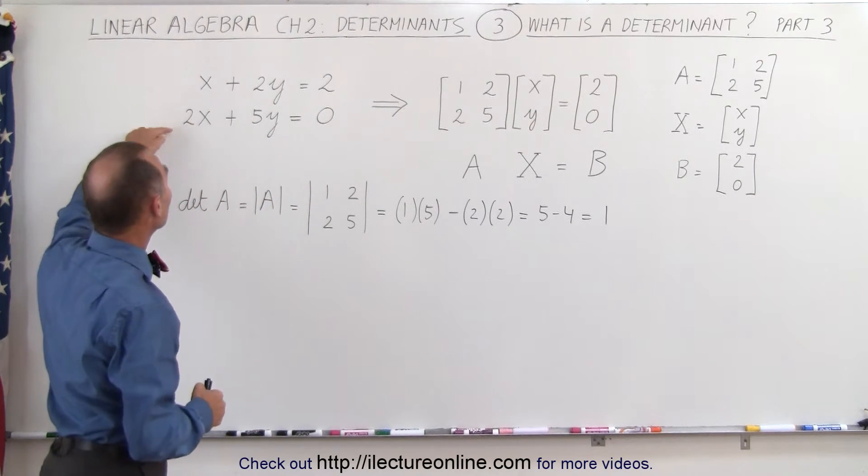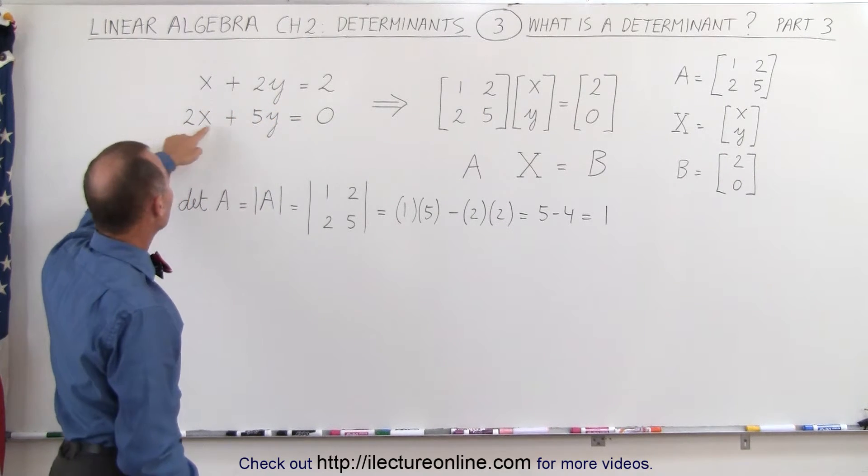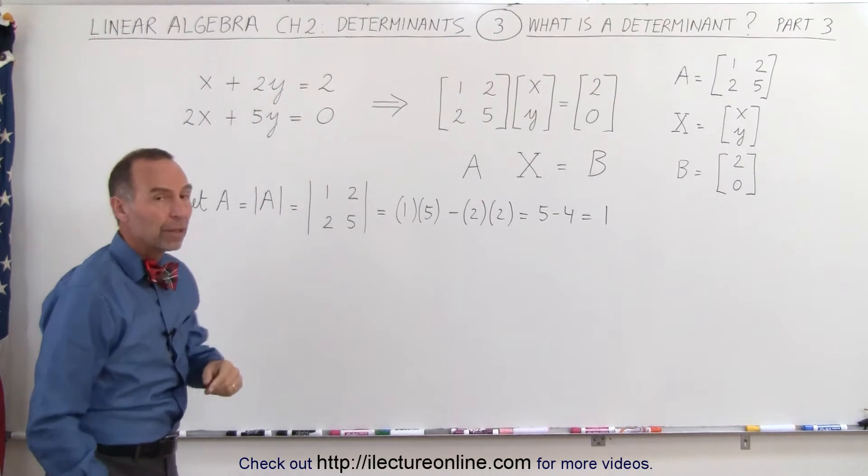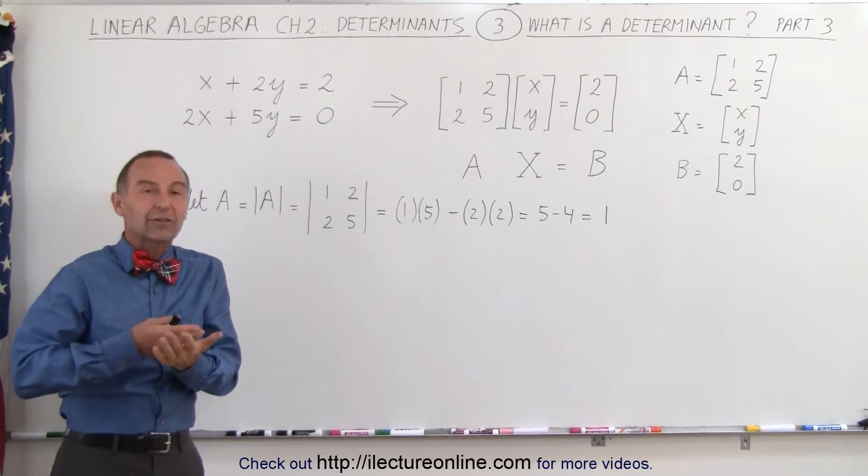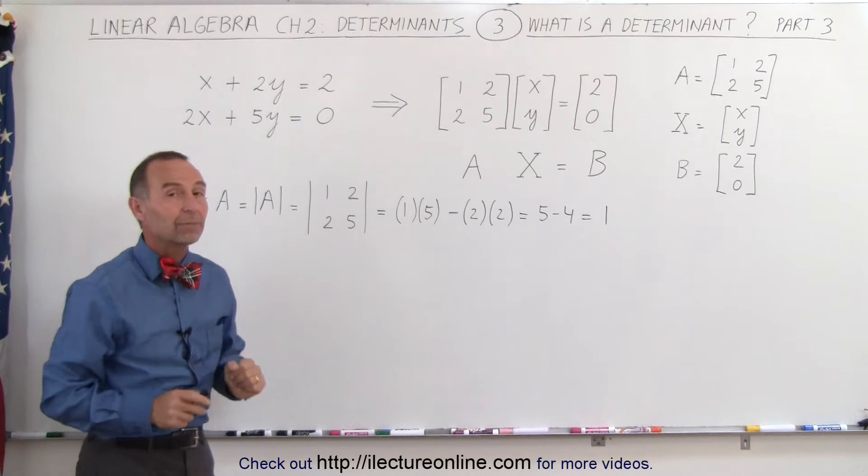We're going to use a very simple example. Let's say we have these two linear equations: x plus 2y equals 2, and 2x plus 5y equals 0. How do we find the values for x and y that will satisfy both of those equations at the same time?